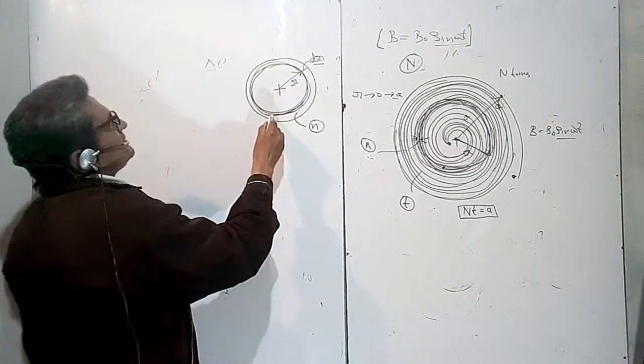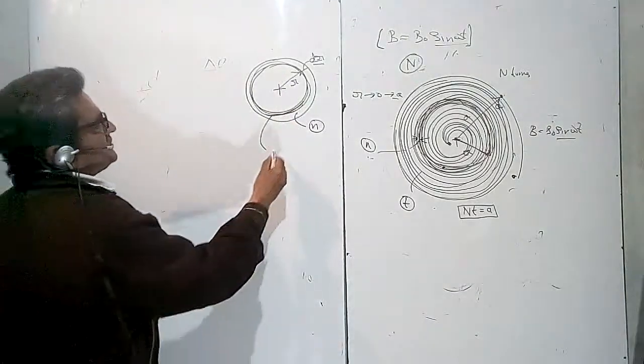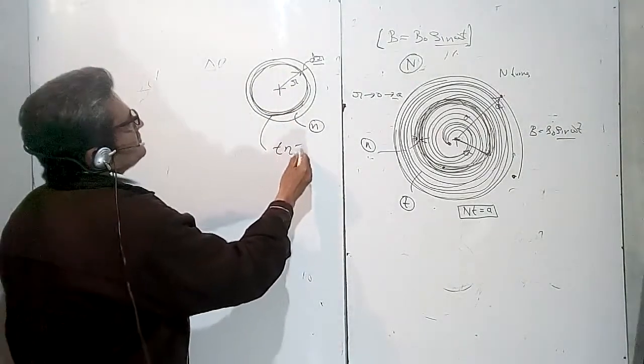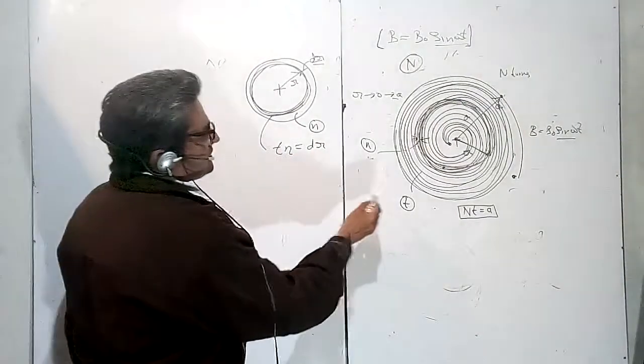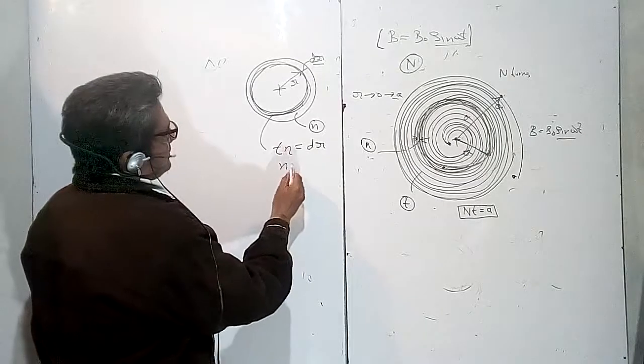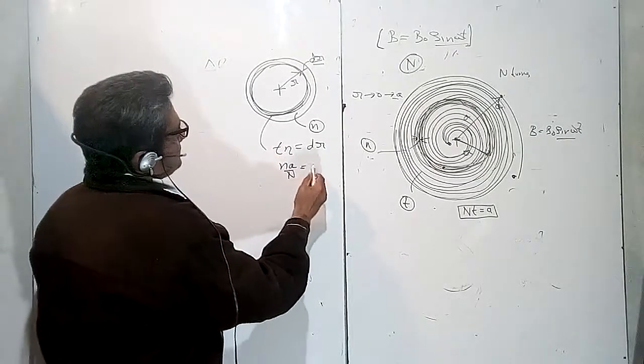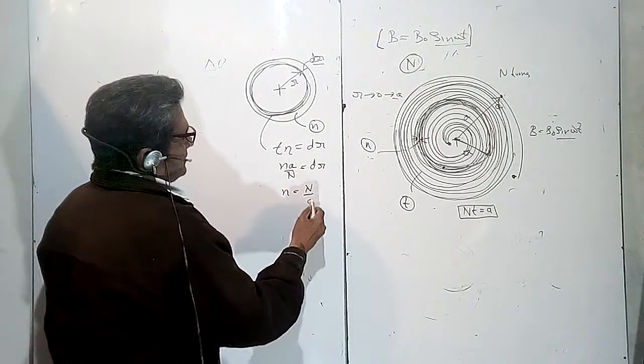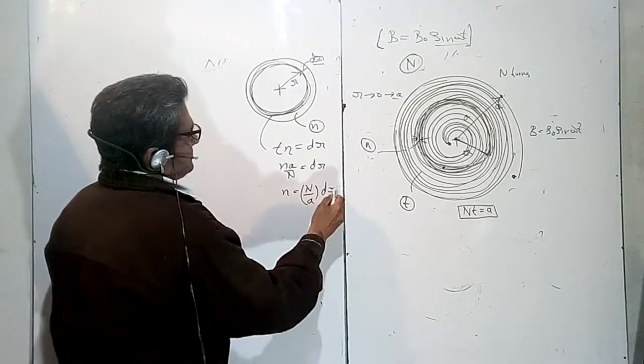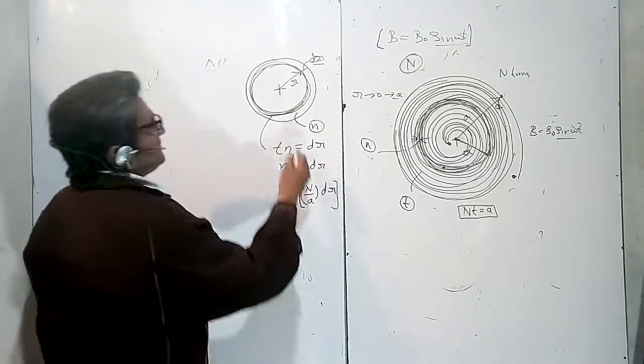In this patch, the thickness of each turn is T. So T into N is equal to dR. Therefore, N is equal to N upon A into dR. This is simple arithmetic. This is the number of turns.